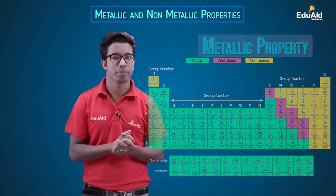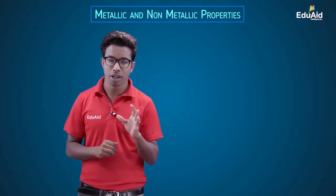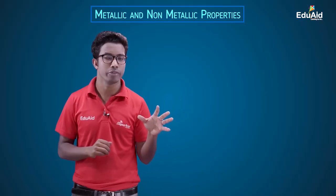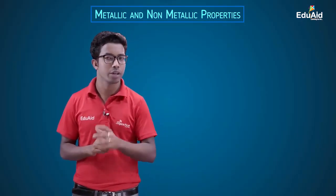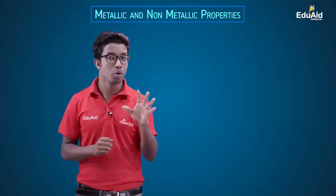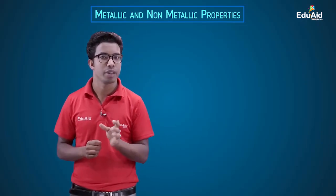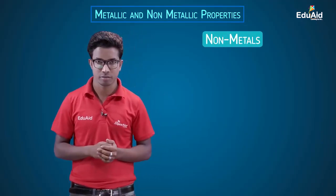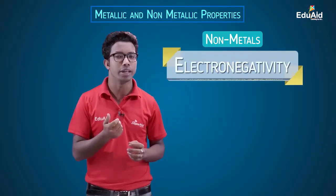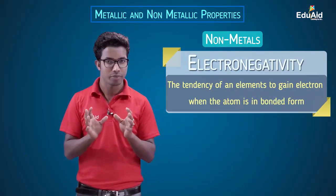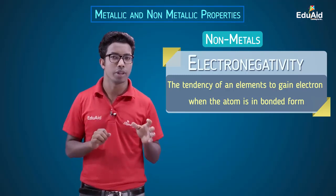Not all elements in the modern periodic table have the tendency to lose electrons. Some of them want to gain electrons to achieve a stable electronic configuration — the configuration of noble gases. The atoms which don't want to lose electrons but want to gain electrons are completely opposite in nature to metals, and those elements are called non-metals. Non-metals have the tendency to gain electrons, and that tendency is called electronegativity when the atoms are in bonded form.